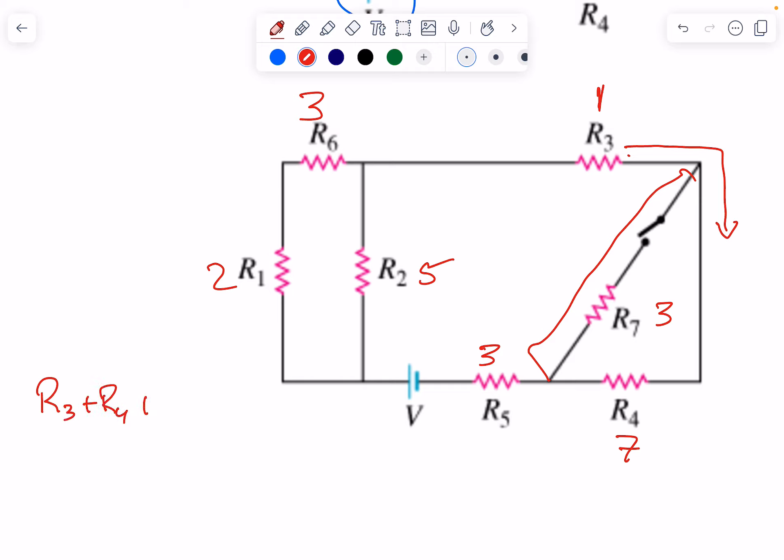When we get to this spot, we have a branch, a parallel. It'll be 1/R2 plus 1/(R1 + R6), all to the negative one. Whatever that comes out to will be your answer.